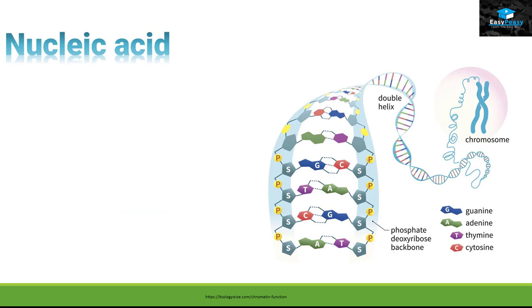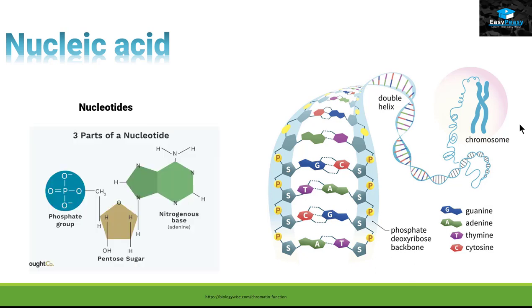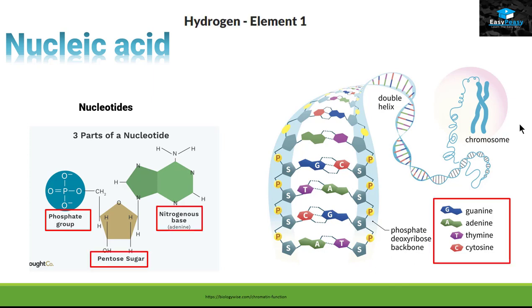The next macromolecule we are going to discuss is nucleic acid. Nucleic acid is usually present inside the nucleus of the cell inside the chromosome. If we look closely at the structure of this chromosome, we can find they are made up of repetitive units called nucleotides. Now nucleotide consists of three different parts: the phosphate group, the pentose sugar, and nitrogenous base. We have four different types of nitrogenous bases.